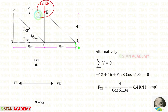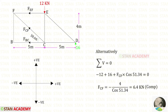Alternatively, using sigma V equals zero we can find FCF more simply. The load is acting downwards — negative. The reaction is acting upwards — positive. FCF is inclined; we make it vertical using angle 51.34 degrees, so we multiply by cos 51.34, and it will be acting upwards — positive. In this way, for FCF we get 6.4 kN, which is compressive.